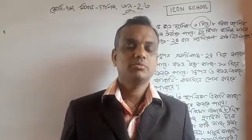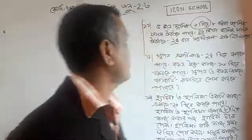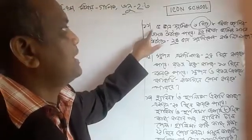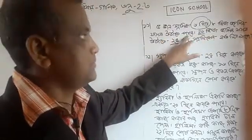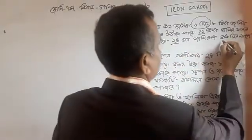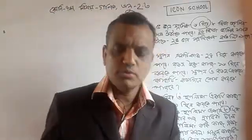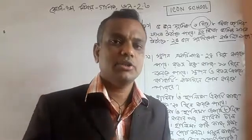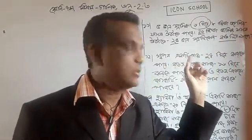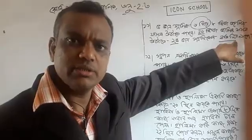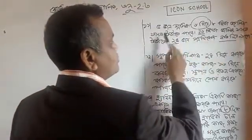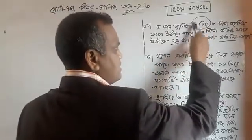Assalamualaikum. My name is Shabtam Senir Gnit. Today we start 2.3. Number 5 days, 6 days, 8 days, 10 days, 25 days. How many days? We are creating this. We have to write 5 days, 100 days. This is our target.